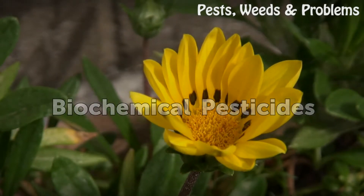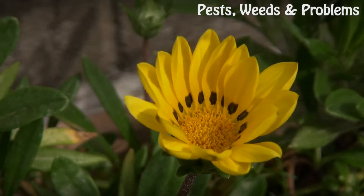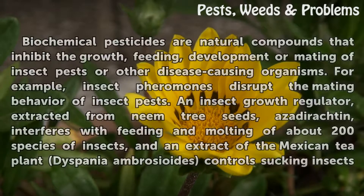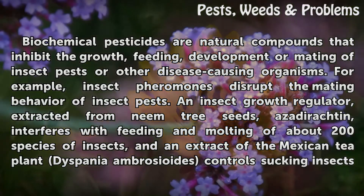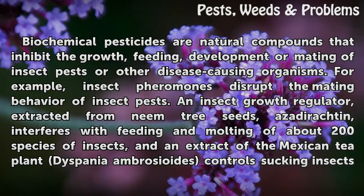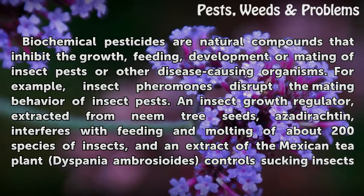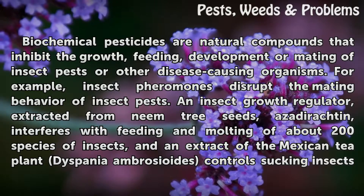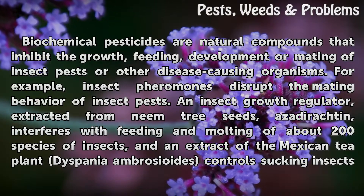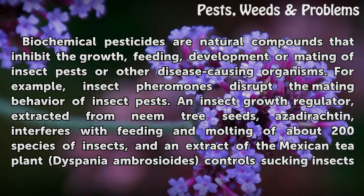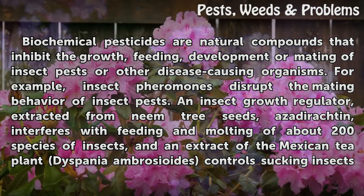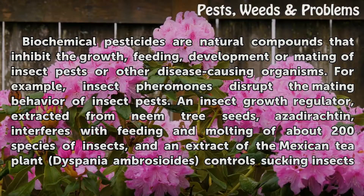Biochemical Pesticides. Biochemical pesticides are natural compounds that inhibit the growth, feeding, development, or mating of insect pests or other disease-causing organisms. For example, insect pheromones disrupt the mating behavior of insect pests.